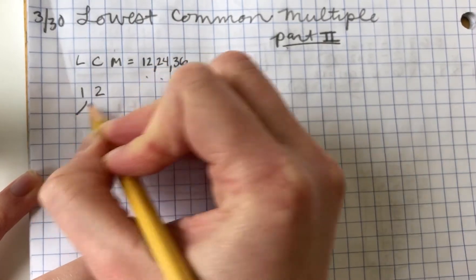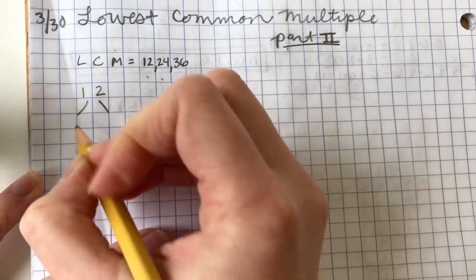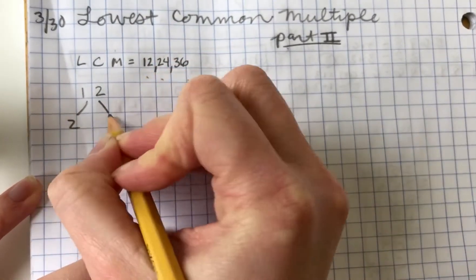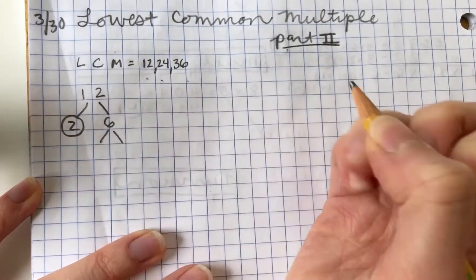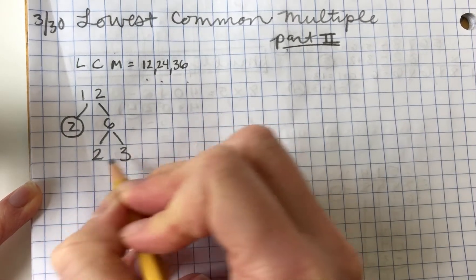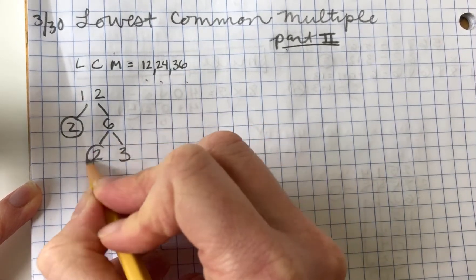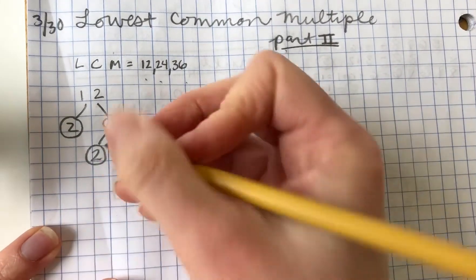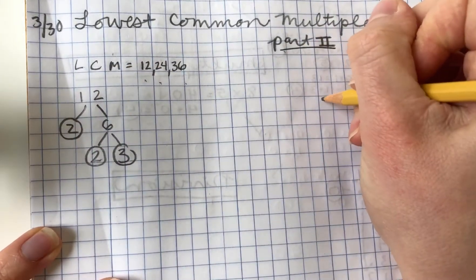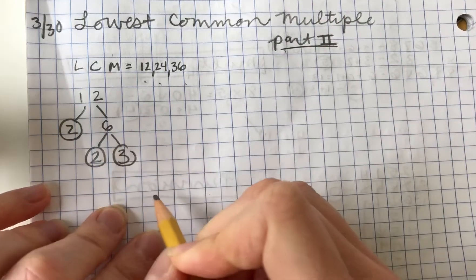So 12, we know the numbers that multiply together to get 12. We could go for 2 and 6. 2 is a prime number. 6 is not, it's composite. So we have to break it down into 2 and 3. 2 times 3 is 6. Those are prime numbers. So we got the prime factors of 12.